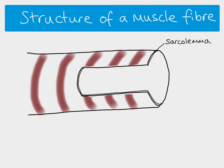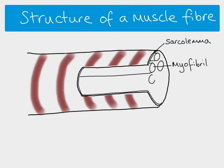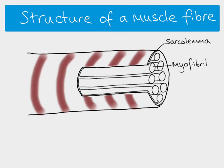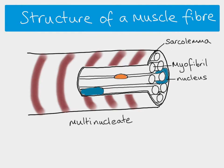Within the sarcolemma, just as with any other cell, you have cytoplasm, nucleus, mitochondria, and other organelles. However, most of the internal space is taken up with structures called myofibrils, which are made of protein filaments. Muscle fibers are unique because they have more than one nucleus — they are multinucleate cells — and mitochondria are wedged in between the myofibrils.